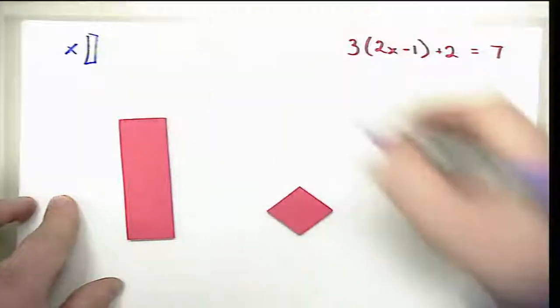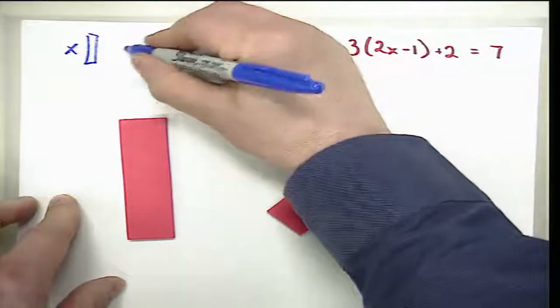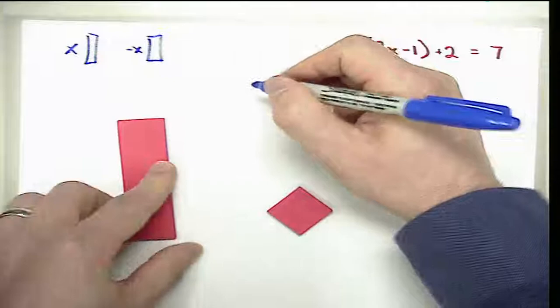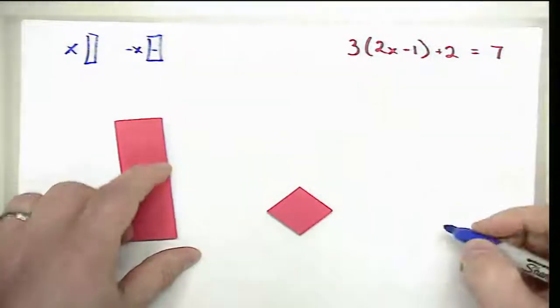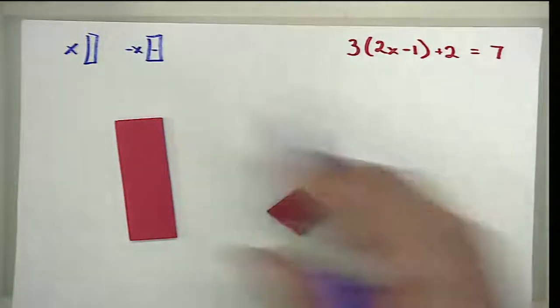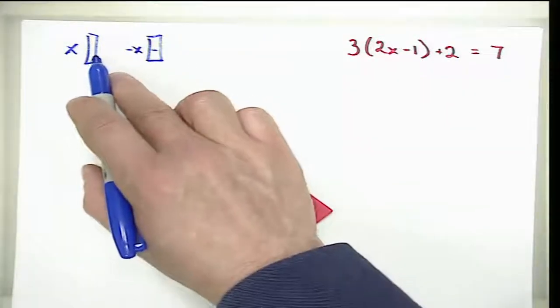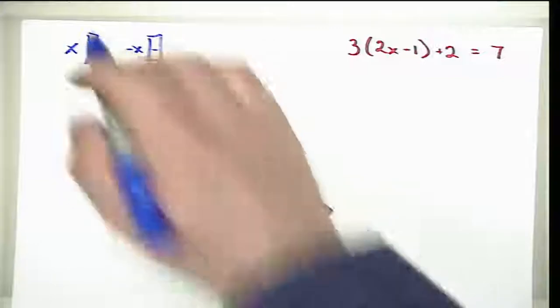When we want a negative X, we are going to draw that same shape that represents X, but we will put a minus sign in there. Now if you wanted, you could include a plus sign with the positive one.